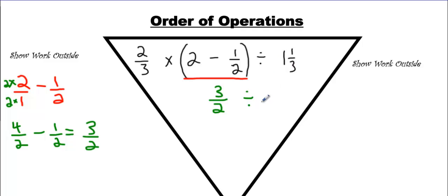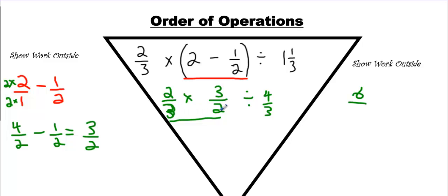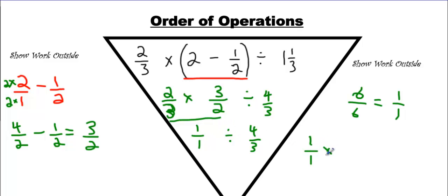Let's convert this — we're going to make that 4 over 3. We'll make this times 2 over 3. Now it's between times and division — they're the same strength, but whatever comes first is what you do first. This time it's times again. So we can go 2 times 3 is 6, 3 times 2 is 6. And 6 over 6 reduced is just 1 over 1. So we have 1 over 1 divided by 4 over 3 — bring everything else down. We're going to go 1 over 1, change this to times, and flip the second fraction. That makes 3 over 4.